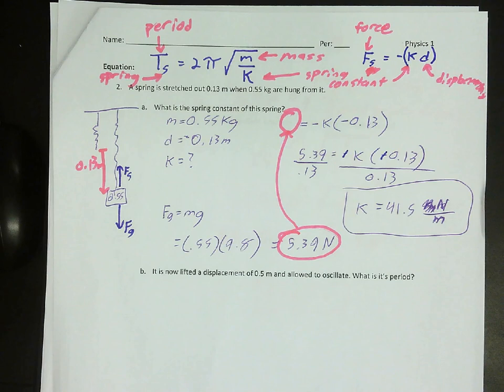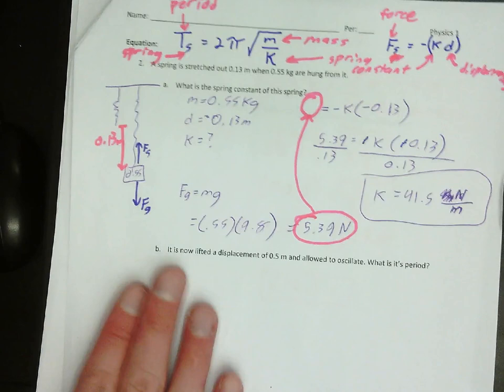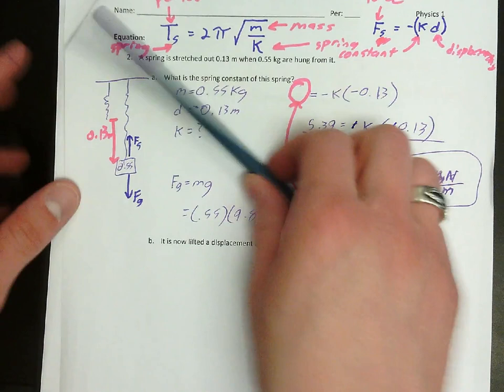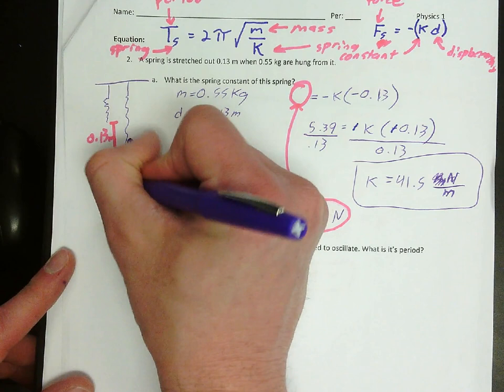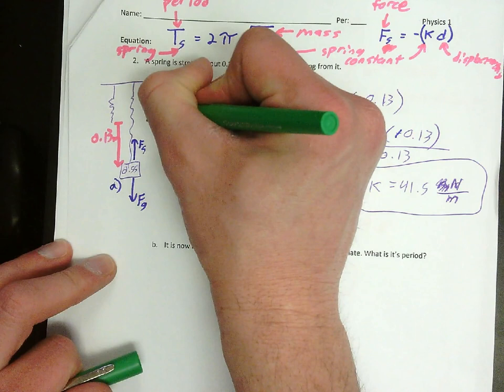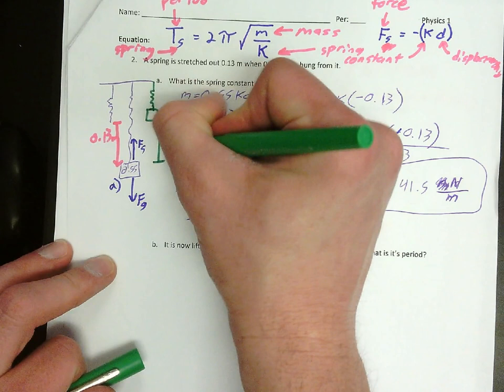Okay, that brings me to part two. So part two, part B. If it's lifted to displacement of 0.5 meters and allowed to oscillate, what is its period? Okay. So, from where it was, so this is A down here. What happens in B now is it's lifted 0.5 meters. So from here to here, it's lifted 0.5 meters. That's what's going on in part B.